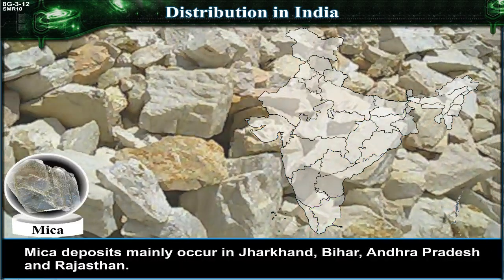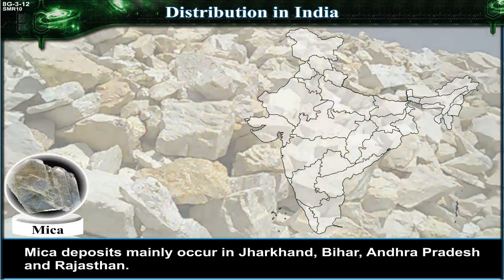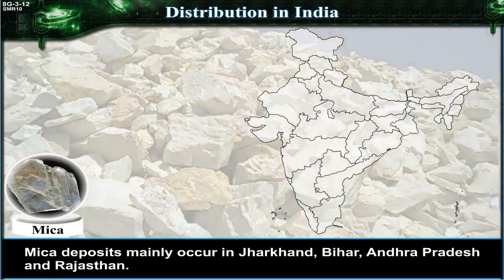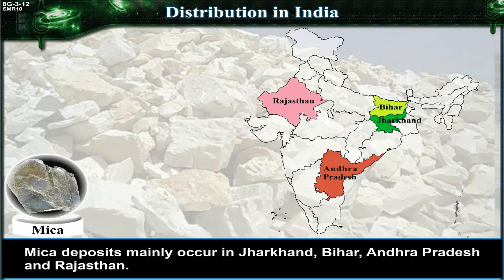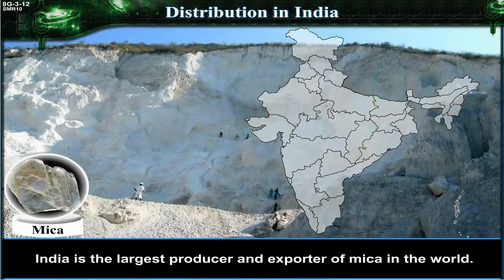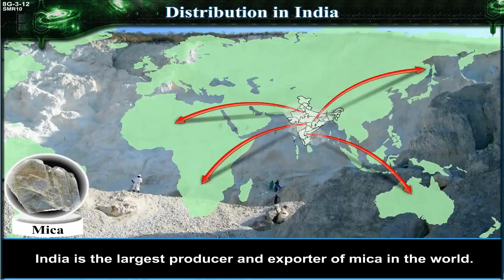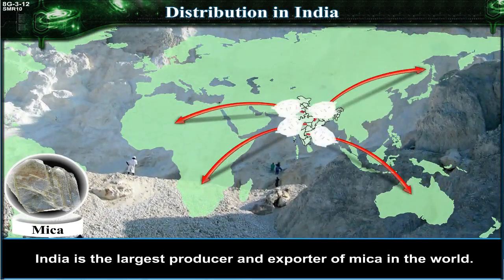Mica. Mica deposits mainly occur in Jharkhand, Bihar, Andhra Pradesh and Rajasthan. India is the largest producer and exporter of mica in the world.